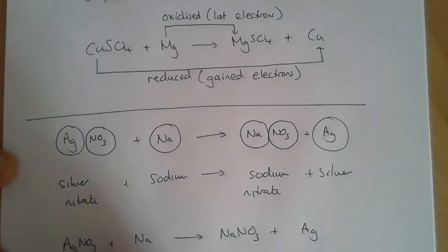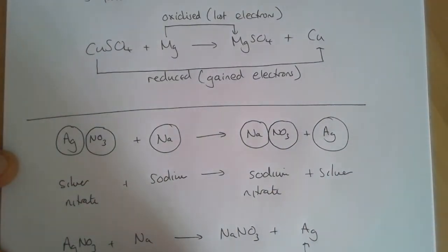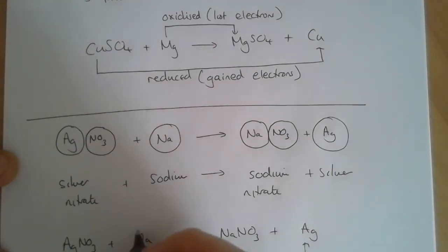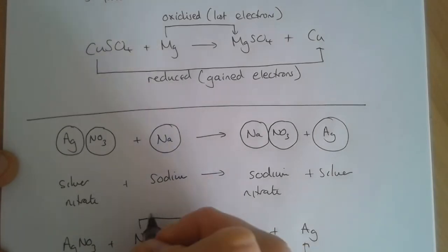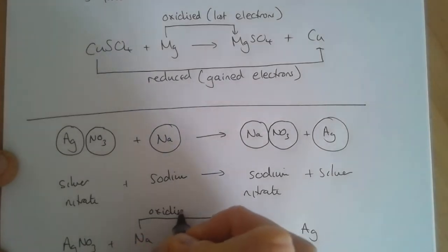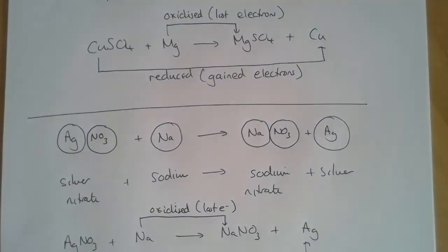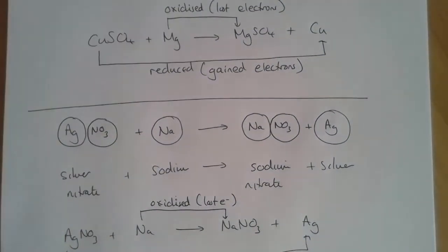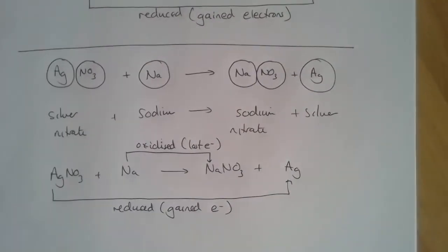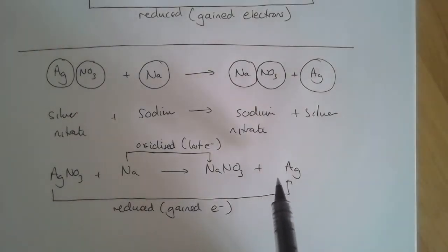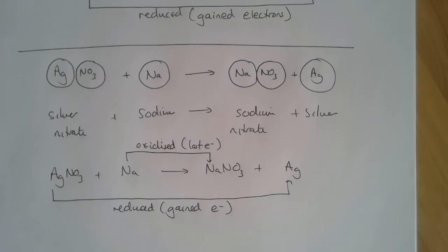Again, we can think about the silver as being reduced because it's lost the compound, but very importantly it has gained electrons, and the sodium has been oxidized. Silver has been reduced because it's lost its compound and it's gained electrons.